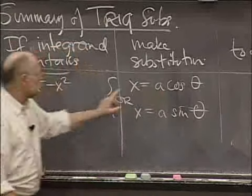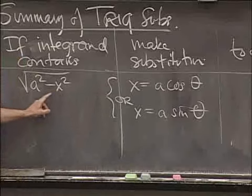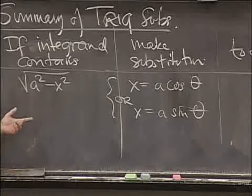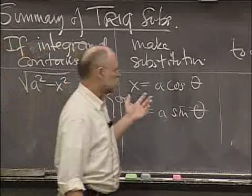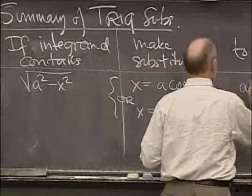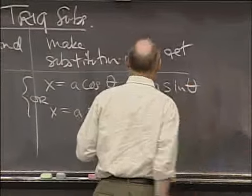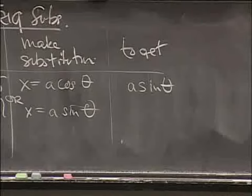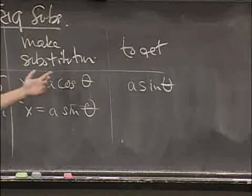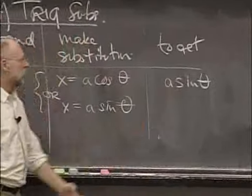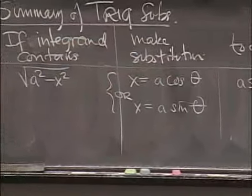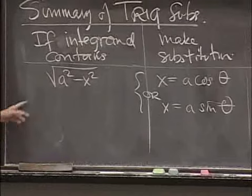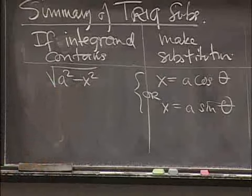And when you make the substitution x equals a times the cosine of theta, you get a squared minus a squared cosine squared theta. 1 minus cosine squared is the sine squared and so you get a sine of theta. So this expression becomes equal to this expression under that substitution. And then you go on. Then you've gotten rid of the square root and you've got a trigonometric integral that you have to try to do.